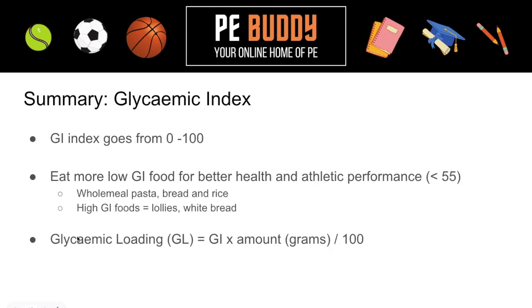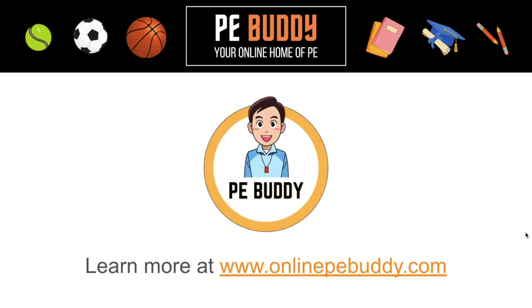All right, well done — you made it! Here is a quick summary of everything you've learnt. The GI index rates how quickly carbohydrates are broken down into glucose, and it goes from 0 to 100. We want to eat more low GI foods — anything from 0 to about 55 — as this helps our health and athletic performance. We want wholemeal pasta, bread, and rice rather than white versions. High GI foods — like lollies, white bread, and heavily processed foods — are unhealthy. Glycemic load is GI index multiplied by the amount of carbs in grams divided by 100. Thanks very much for watching — if you have any questions, please comment below.